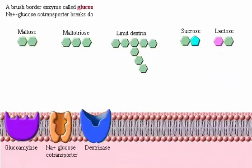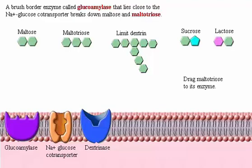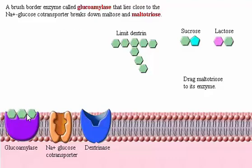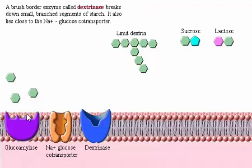A brush border enzyme called glucoamylase, which lies close to the sodium-glucose co-transporter, breaks down maltose and maltotriose. Another brush border enzyme called dextrinase breaks down small branched segments of starch, and it also lies close to the sodium-glucose co-transporter.